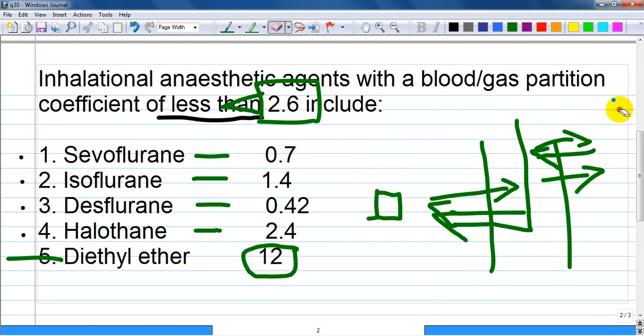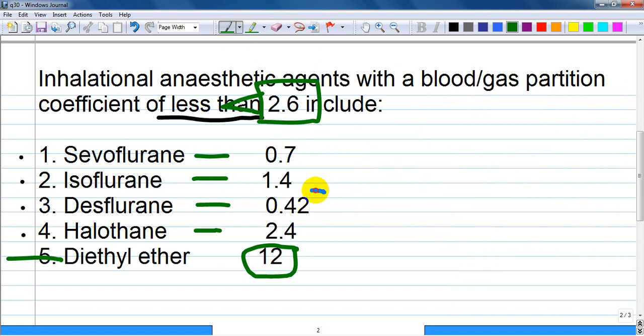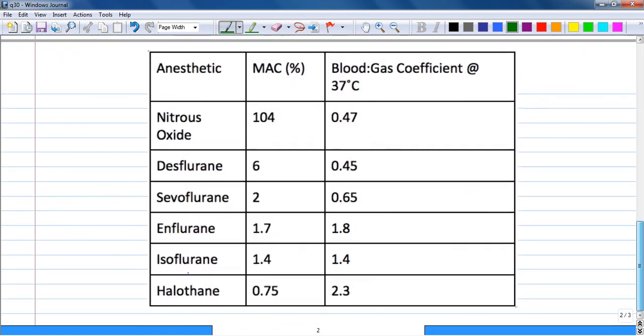And so, lower values of blood gas partition coefficient are found with sevoflurane and desflurane. It means that such inhalatory anesthetics equilibrate rapidly and induce patients in anesthesia.